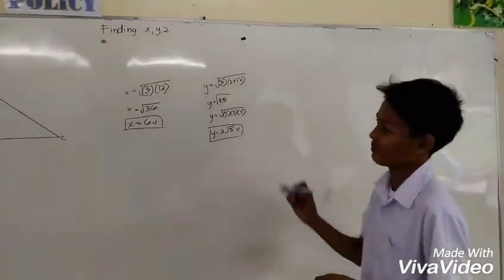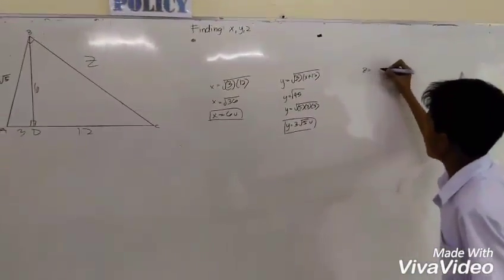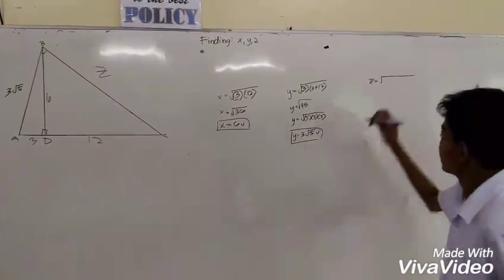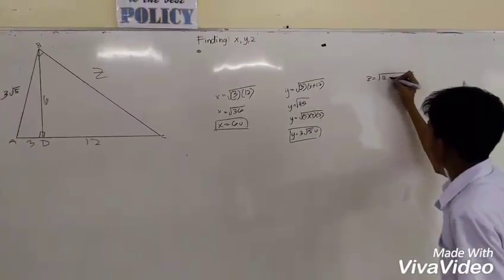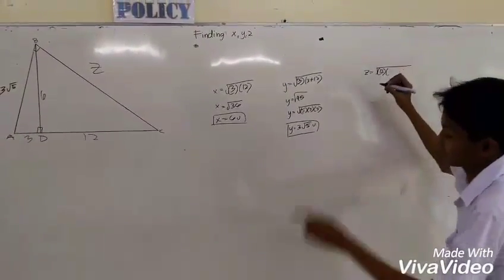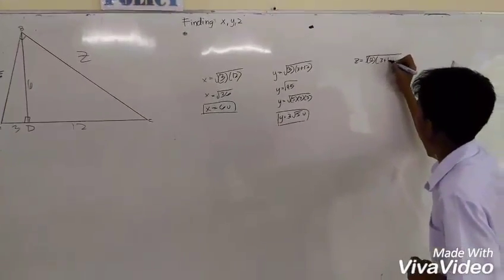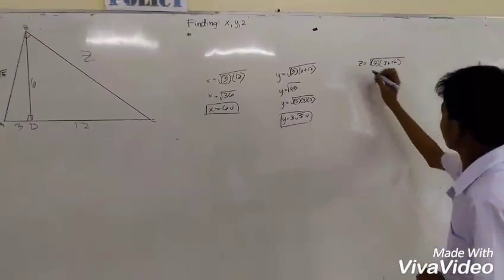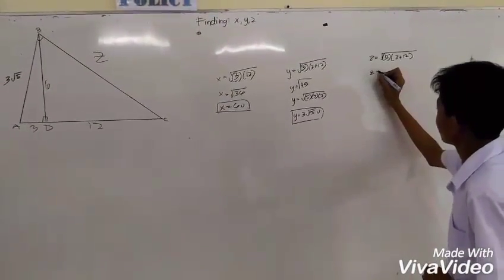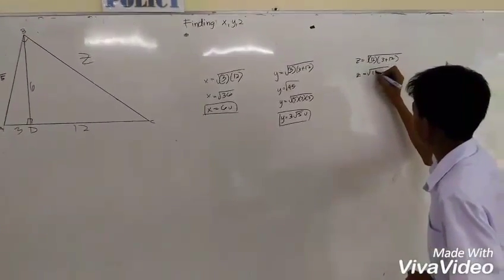Now we must find z. To find z, we must extract the square root of 12 multiplied by the whole line segment 3 plus 12. If we multiply that, the answer is 180.